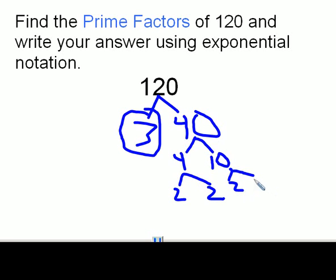Now I'm going to circle all of my prime numbers. The 2's, these 2's, all the 2's here are prime. And then this 5 here is prime.